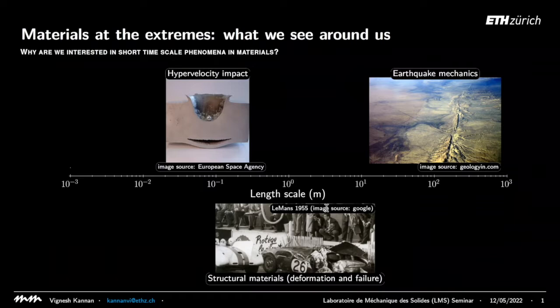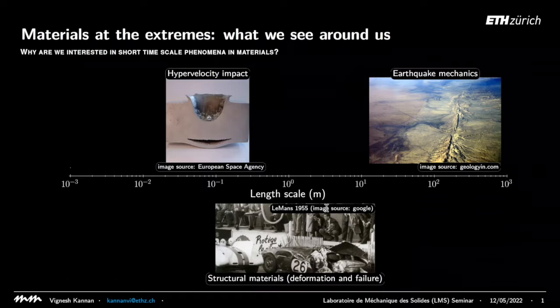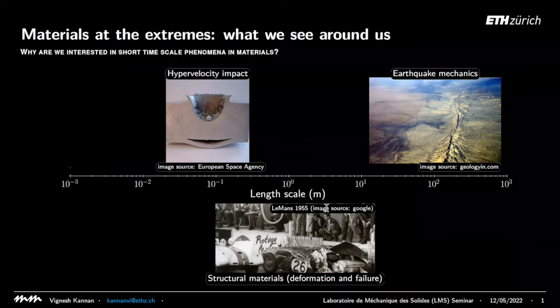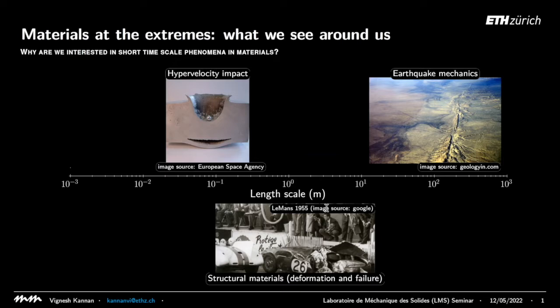A third example is from a hypervelocity impact. The fundamental problem is you have a structure hurtling through space, and you have micrometeorites that impact the material at kilometers per second velocities. This is a canonical experiment: a steel ball a few millimeters in diameter impacts an aluminum plate. The steel ball removes a lot of material, and a failure surface opens up at the back — called spall — caused by the interaction of shock waves.